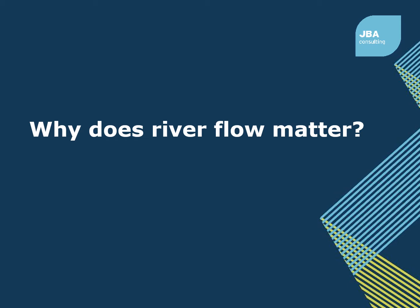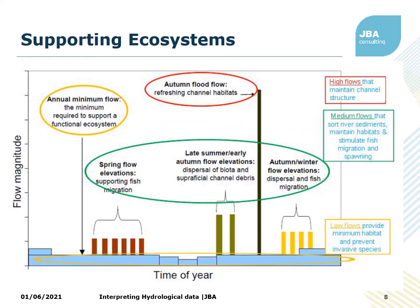The next group of slides look at the question: why does river flow matter? We'll be thinking about environmental flows, how to work them out and what you need to do with them. River flows support ecosystems. This plot is taken from a UK government document. You've got time of year across the bottom and size of flow going up the side. You can see the blue blocks at the bottom are the minimum flow — the minimum you need for your ecosystem to function.